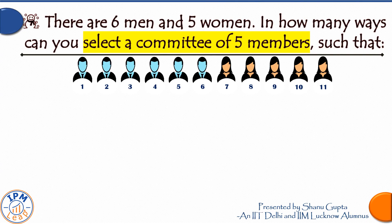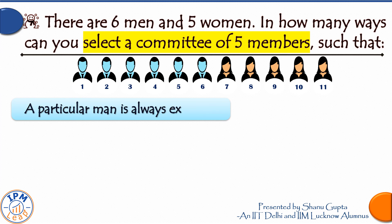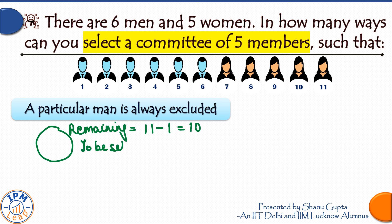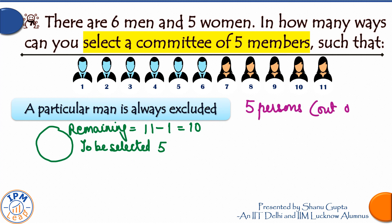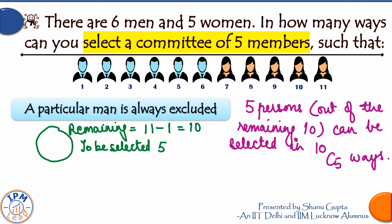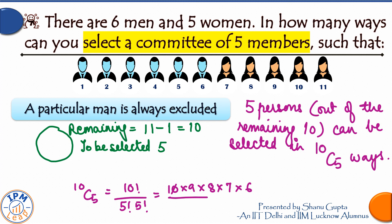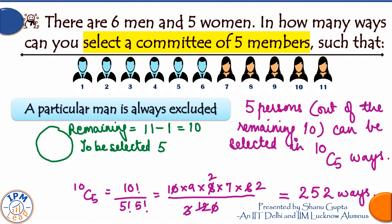Next: in how many ways can we form the five-member committee such that a particular man — say Lankesh — is always excluded? We must form the committee from the remaining 10 persons. We still need five members and have selected nobody so far, so those five can be chosen in 10C5 = 252 ways. There are 252 committees in which Lankesh is always excluded.